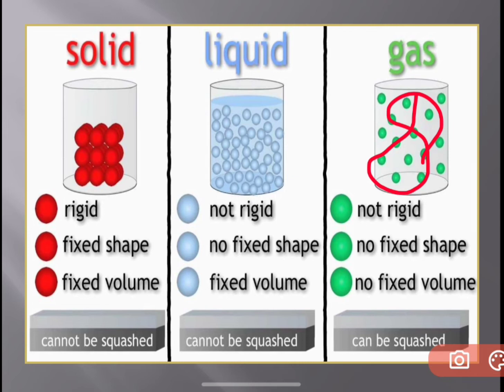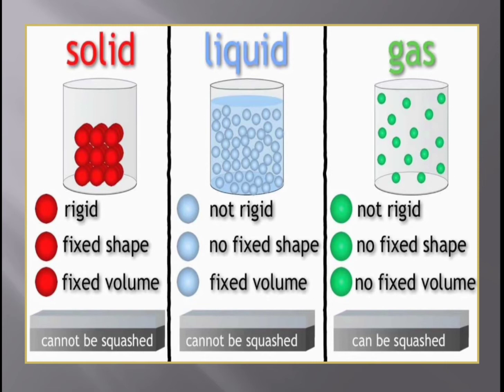They have maximum freedom to move. That's why gases do not have any fixed shape or any fixed volume. They take up all the space available. Even if the amount is the same, they take up a lot of space — that's why they don't have a fixed volume or fixed shape.